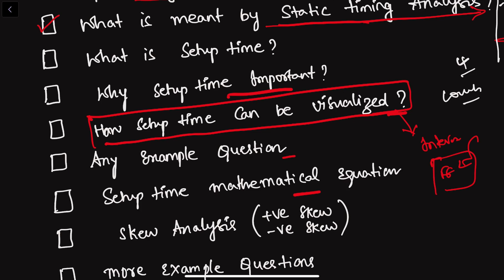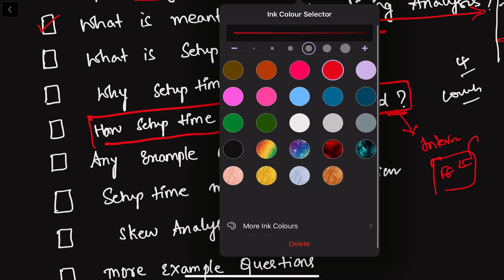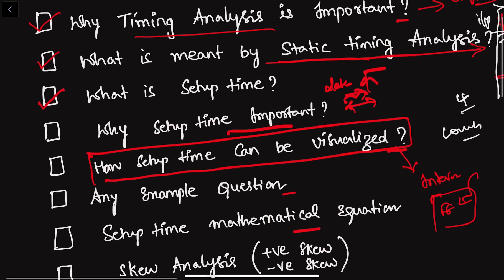The definition is clear: before the clock edge, the data must arrive a minimum time ahead so that you correctly capture the output for the corresponding input. This minimum time is the setup time. Why it is important: if data comes after the setup time window, it will go into a metastable state. Why setup time is important is best explained after visualizing it. So in this tutorial we covered: what is setup time, what is static timing analysis, and why timing analysis is important.